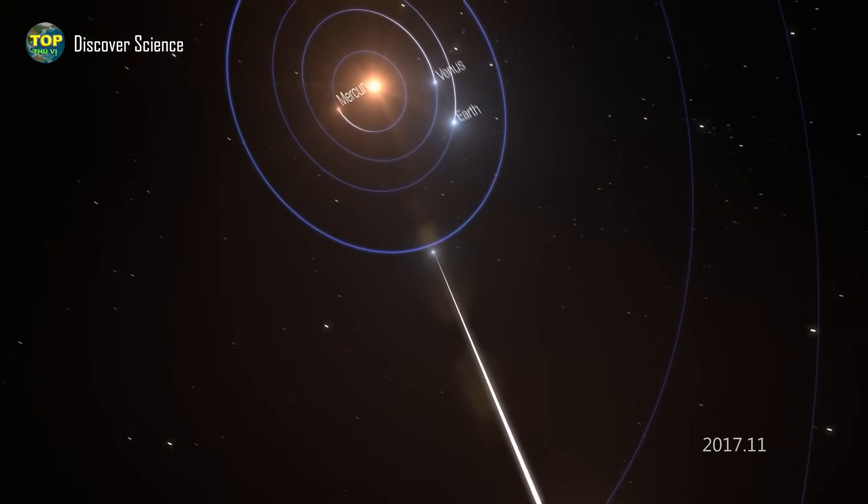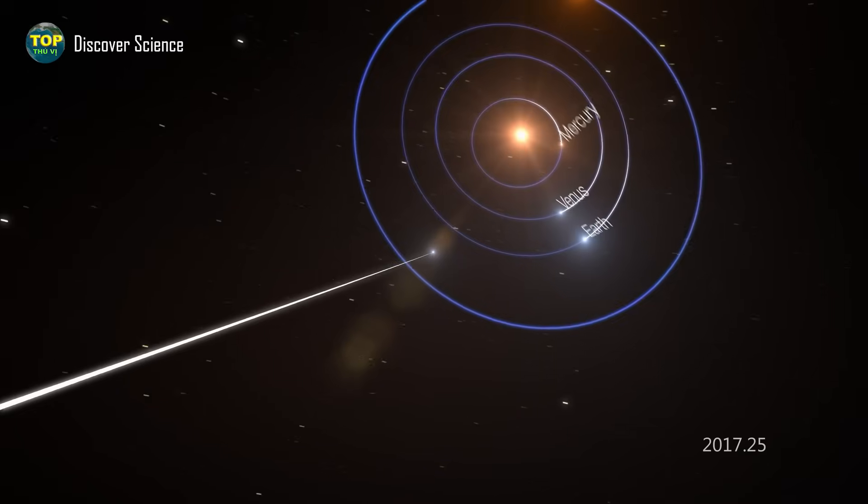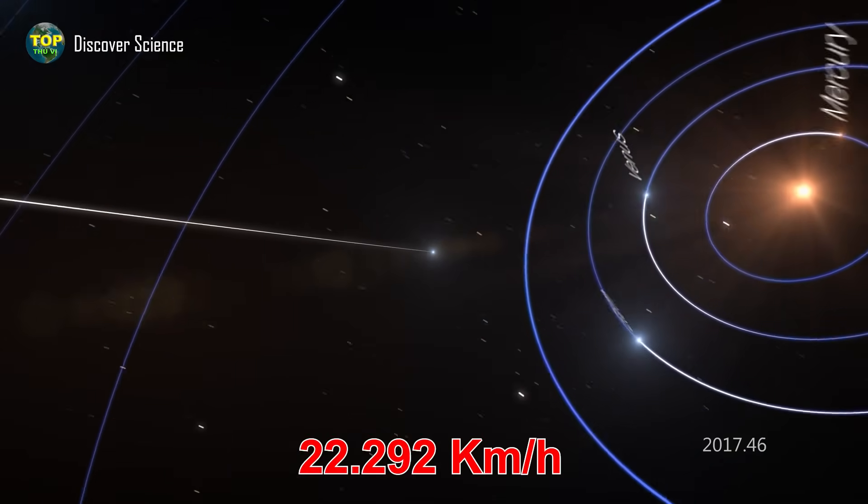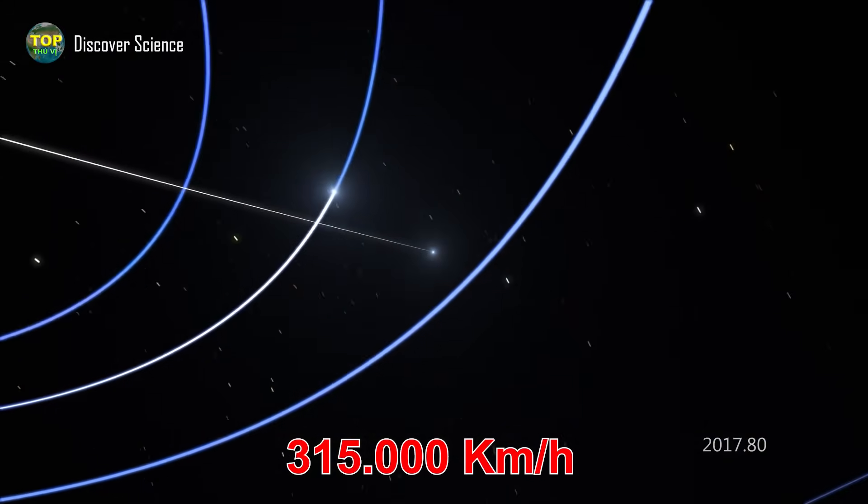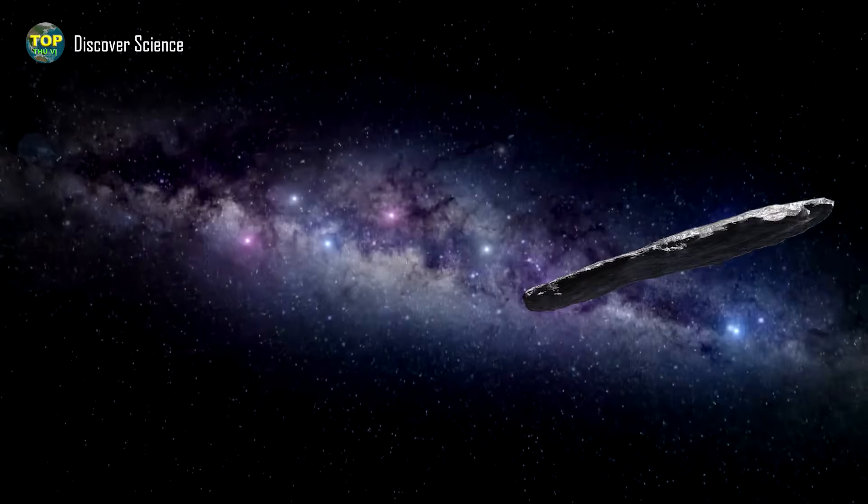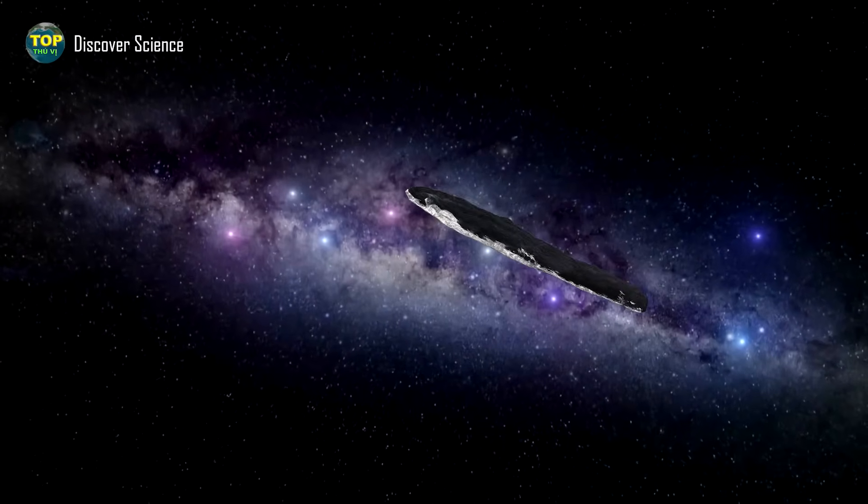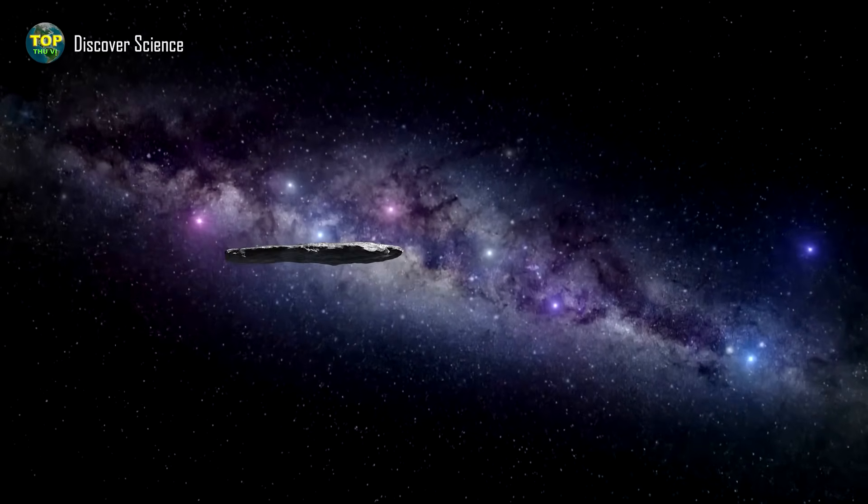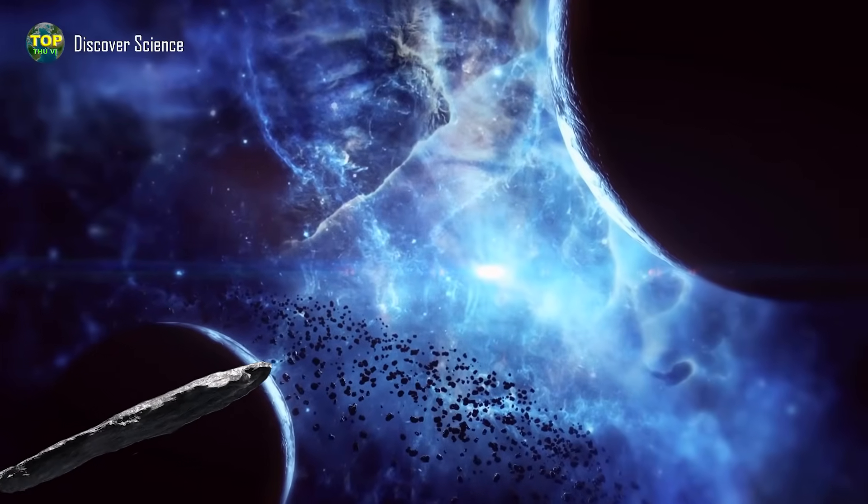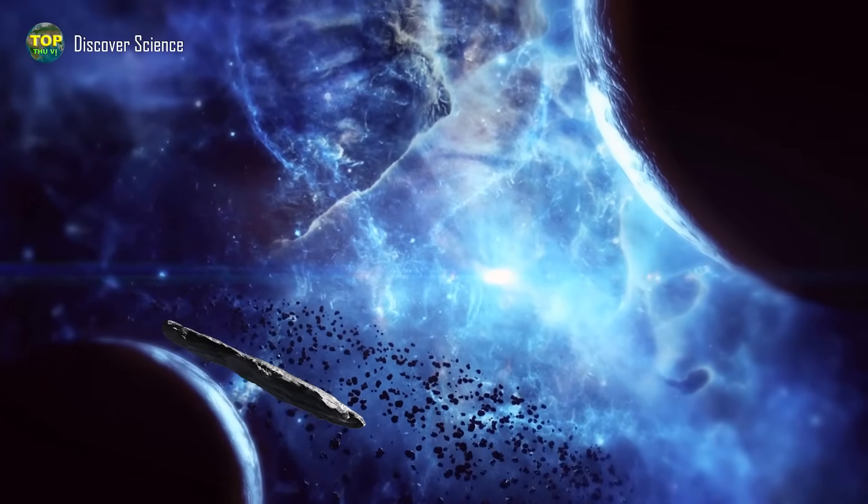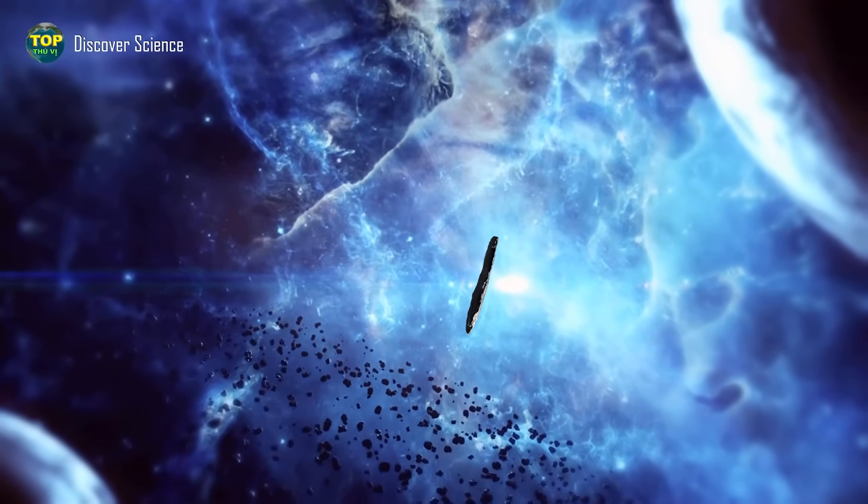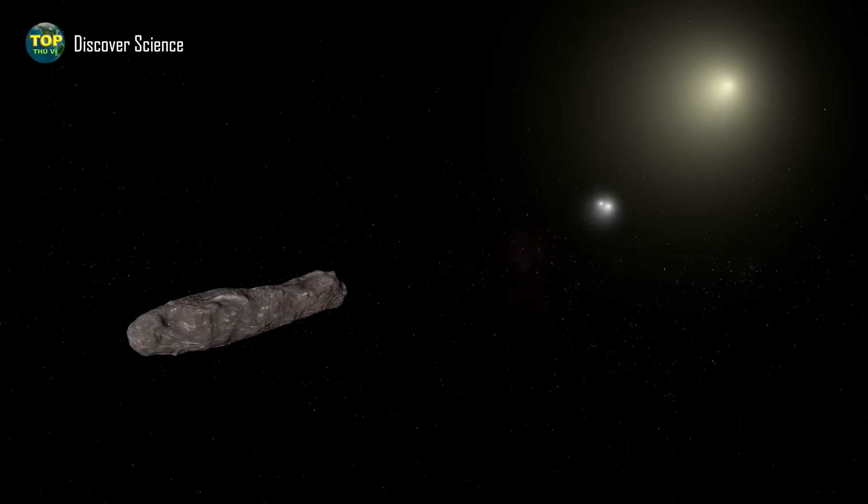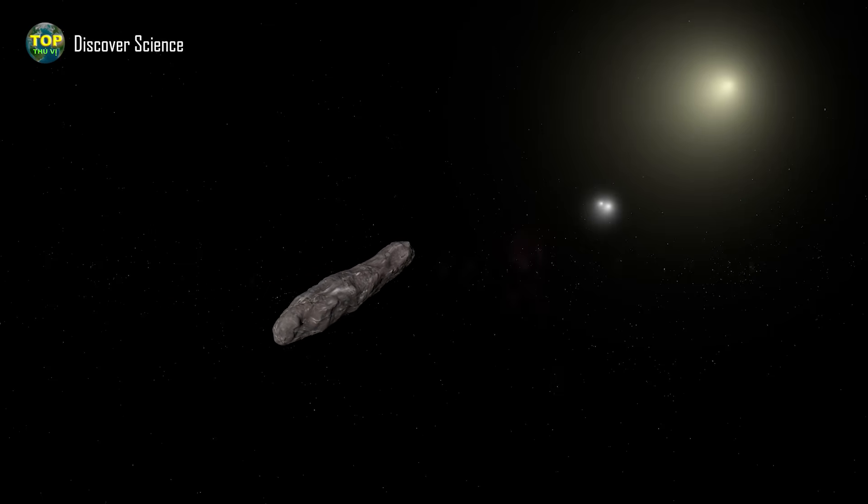After passing closest to the sun in September 2017, 'Oumuamua continued to travel at a speed of up to 315,000 kilometers per hour, leaving the solar system forever. It is now heading toward a vast empty region between stars, where calculations show it will not encounter any other star systems for millions of years to come. This proves that 'Oumuamua is a true interstellar object—unbound by the sun's gravity, not returning, and not part of our solar system. It simply passed through like a stranger, accidentally opening the door to the mysteries of the universe before disappearing into the darkness.